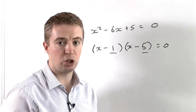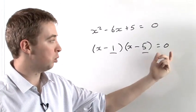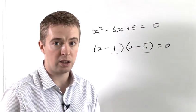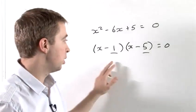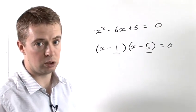Once we're in this position, why is that helpful? Well, what we now have is one bracket multiplied by another equals 0. And in that case, there are only two possibilities. Either this bracket here is equal to 0, or this bracket here is equal to 0.